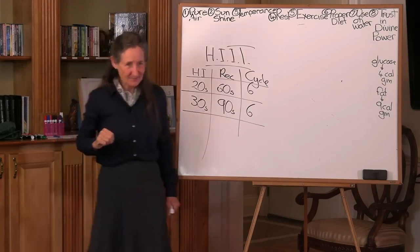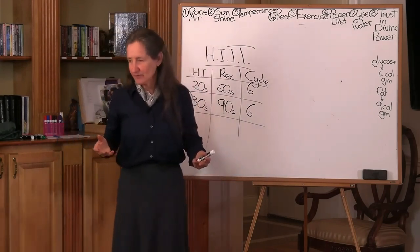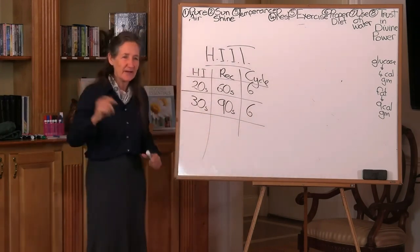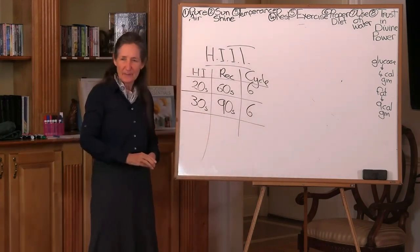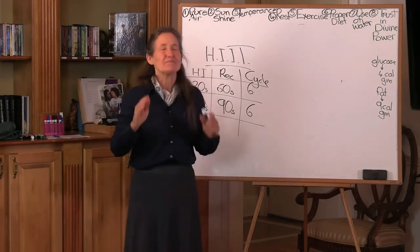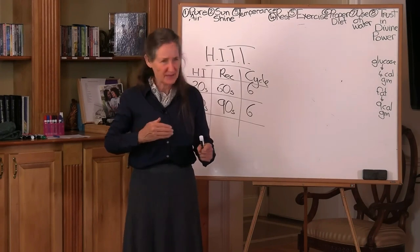In the Framingham Heart Study—I've quoted this study a couple of times—30,000 people in a little town over many years. They found that by the age of 50, most people had lost 40% of their lung capacity.